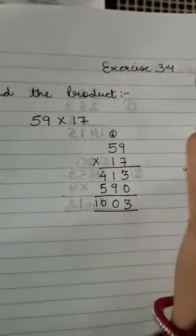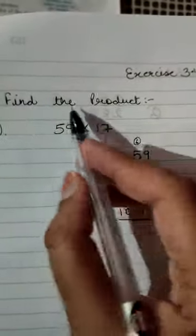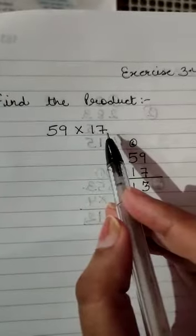Now students, exercise 3.4. The question is find the product: 59 × 17.